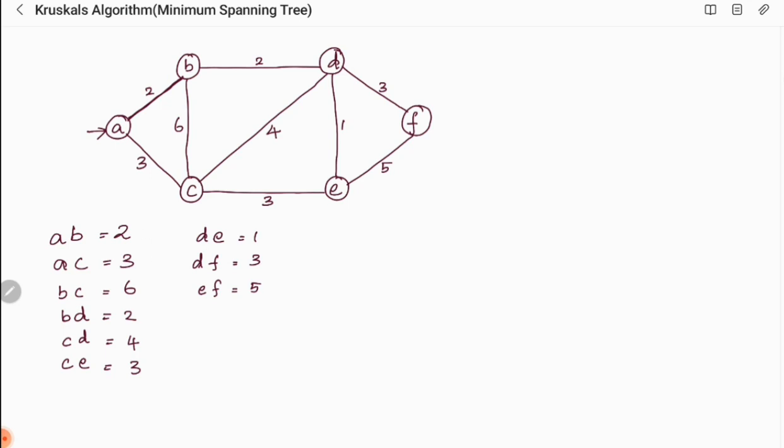Kruskal's is very simple. First we have to select the minimum edge. Here the minimum edge is DE with cost 1. So first I am going to plot D and E together with weight 1. We have picked the edge DE.